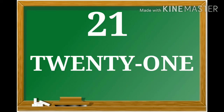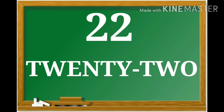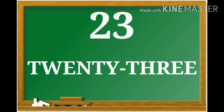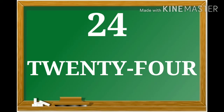21: T-W-E-N-T-Y, 20, O-N-E, 1 — twenty-one. 22: T-W-E-N-T-Y, 20, T-W-O, 2 — twenty-two. 23: T-W-E-N-T-Y, 20, T-H-R-E-E, 3 — twenty-three. 24: T-W-E-N-T-Y, 20, F-O-U-R, 4 — twenty-four.